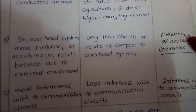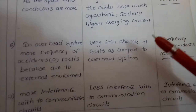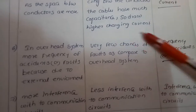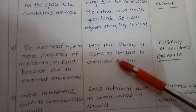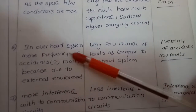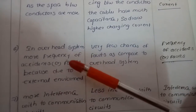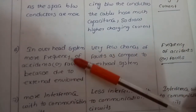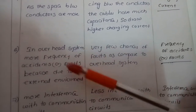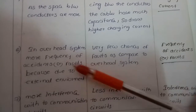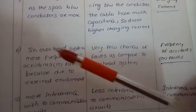Regarding frequency of accidents and faults, underground systems have very few faults because cables are totally enclosed in a dug channel. Overhead systems have more frequency of accidents because all the lines are exposed to the environment, making more faults and accidents more likely.